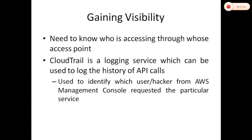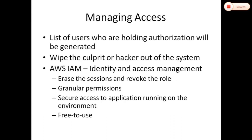Gaining Visibility means knowing who is accessing your resources. In AWS, there is a service called CloudTrail which maintains a history of API calls. You can look at this history to access and audit activity in AWS.